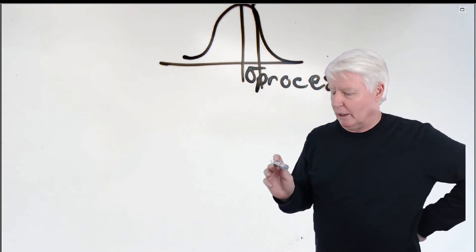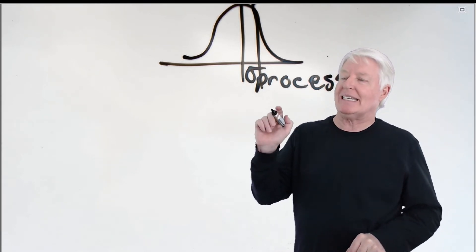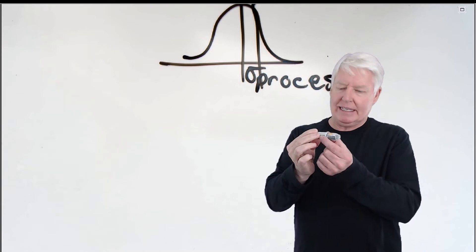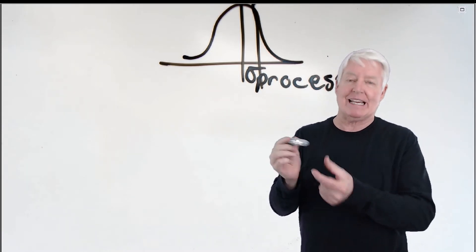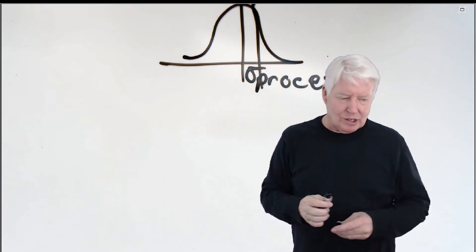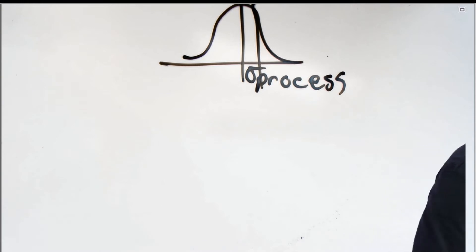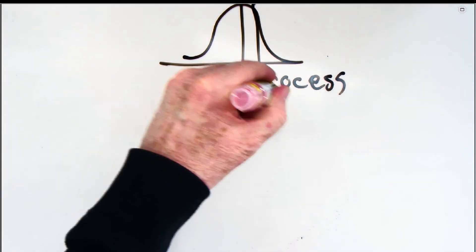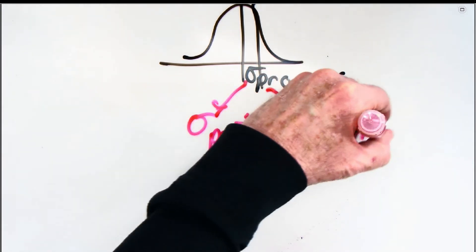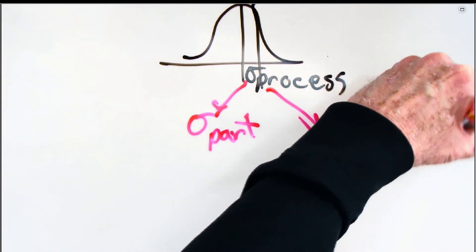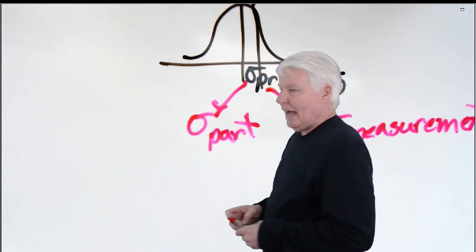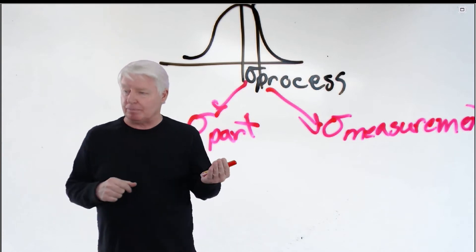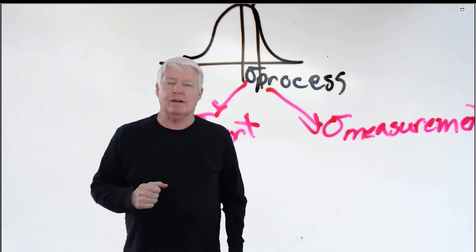Sigma of the process is a sigma we often work with, but it actually consists of two components. One is sigma of the part — that's what we really want to know when we measure something and create the distribution. But it's more than that. Sigma of the process can be broken into two components: sigma of the part, and sigma of the measurement system. The sigma you always work with — you think it's sigma of the part, but it's really sigma of the part plus sigma of the measurement process.